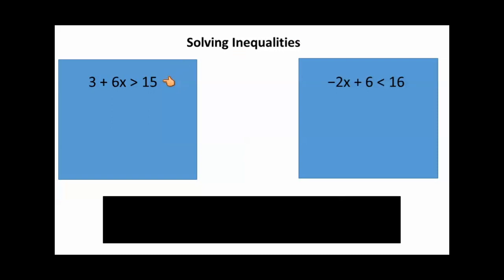Let's start off with a basic inequality. Here we have 3 plus 6x is greater than 15. Just like in solving a normal equation, we want to get this x by itself. The first thing we're going to do is get rid of this plus 3. When we have something that's being added, we subtract that number from both sides. So I'm going to subtract 3 from both sides of the inequality. This leaves me with 6x is greater than 12.